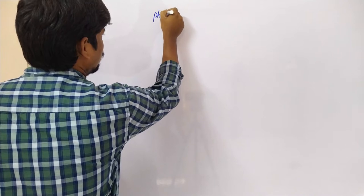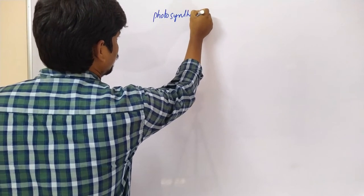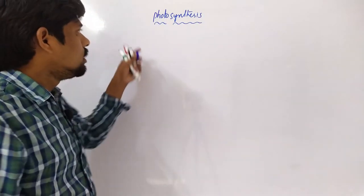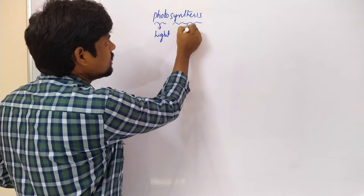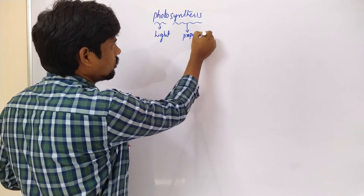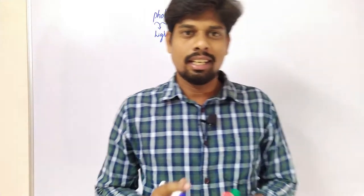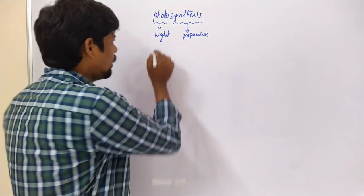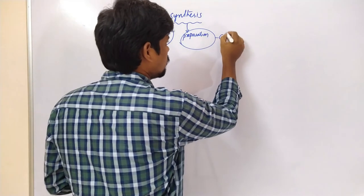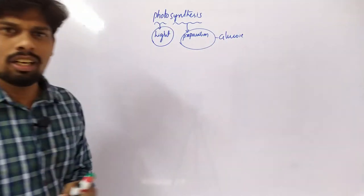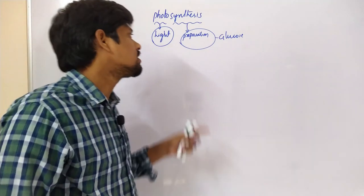Hello, hi my dear friends, welcome to my channel HSR Bioinfo. Today we are going to discuss an important function of chloroplast, that is photosynthesis. Let us start with photosynthesis. Photo means light, synthesis means preparation. Photosynthesis can occur in green plants because green plants utilize light energy and prepare their own food, that is glucose. Simply, the preparation of glucose by utilizing light energy is called photosynthesis.